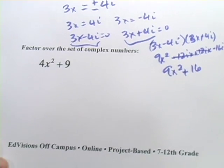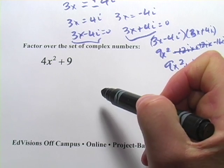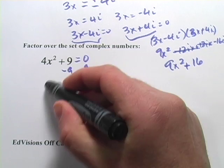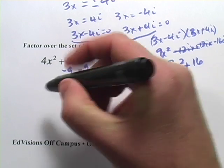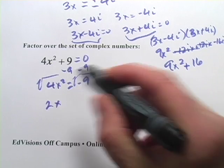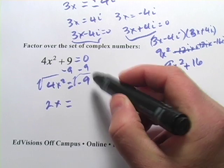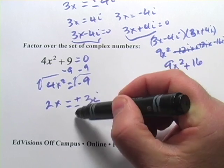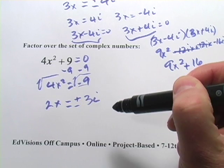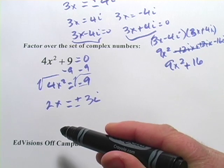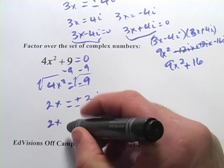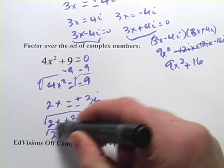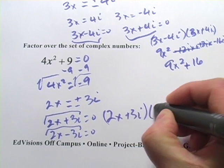That might seem a little strange. Let's try another one, make sure we've got this down. We want to factor over the set of complex numbers, so I'm going to set this quadratic equal to zero and try to solve for x first. We'll subtract 9 from both sides. We get 4x squared equals negative 9. I'm going to take the square root of both sides. I get 2x over here, and over here the square root of negative 9 — it's the square root of negative 1 times the square root of 9 — it's going to be plus or minus 3i. Now I'm going to go back in the other direction, and we get 2x plus 3i equals zero and 2x minus 3i equals zero. So those are our factors: 2x plus 3i and 2x minus 3i.